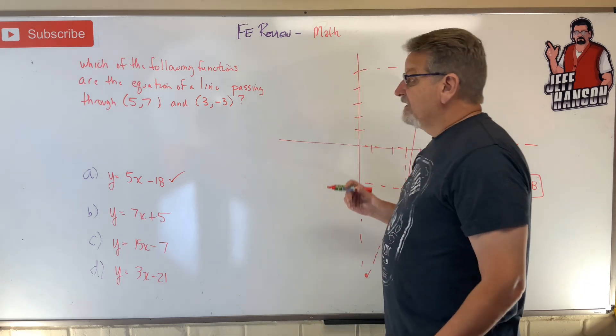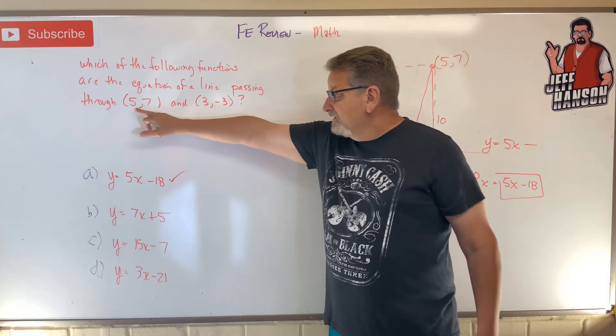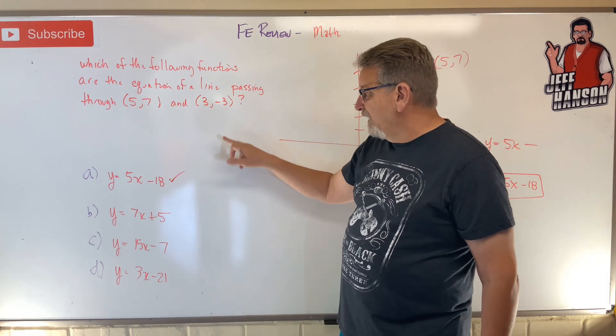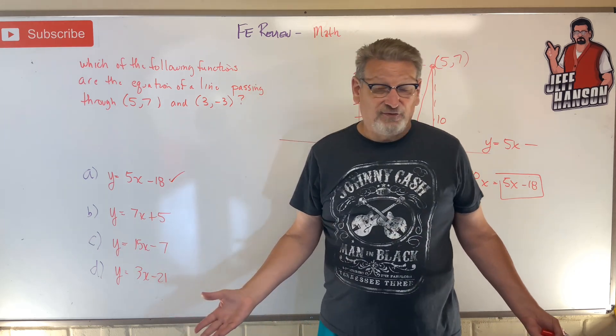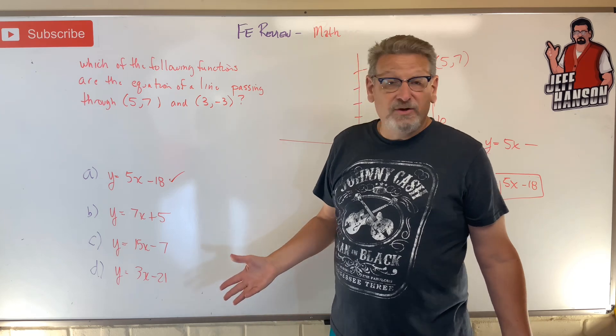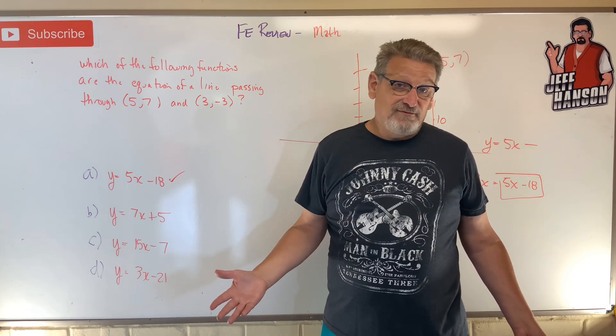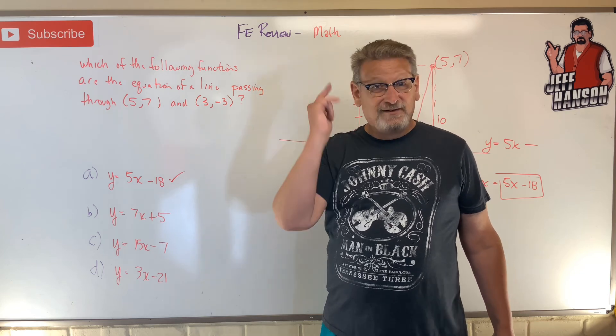Okay, so we know that it's A. Now the other thing that you could do real quick is just take these numbers - that's x, that's y, that's x, that's y. If you plug them into these functions it should satisfy the function. This side should be equal to that side, and there should be only one that does that. That's the easy way to do it. All right, did you get it? Let's do another one.